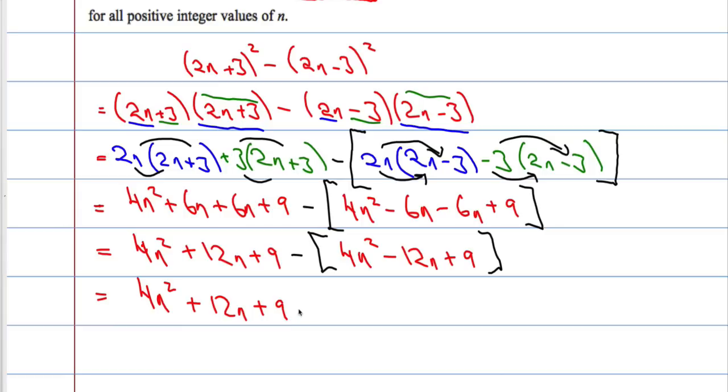I'm doing negative all of this, so that's going to be minus 4n². Negative times negative is positive. Negative times positive is negative. Now let's collect our like terms together. 4n² take away 4n² is 0, so we cancel out. 12n plus 12n is 24n, and 9 take away 9 is 0. So we get 24n.